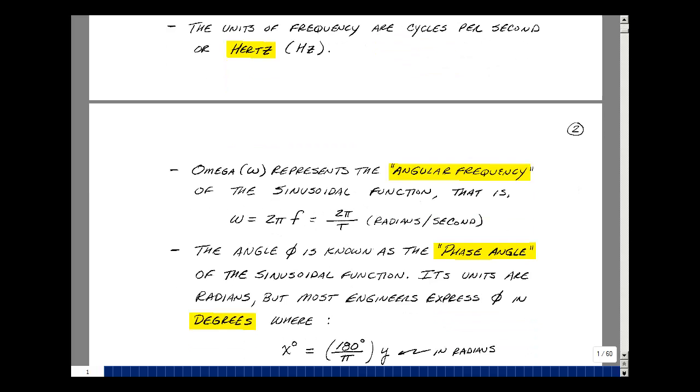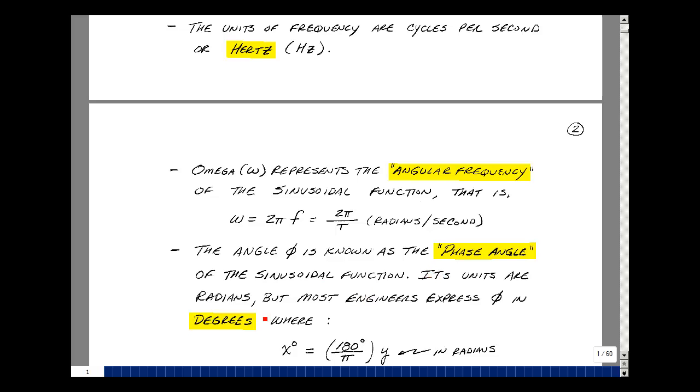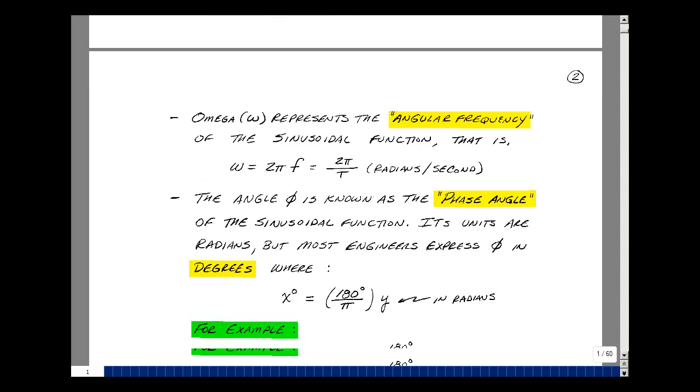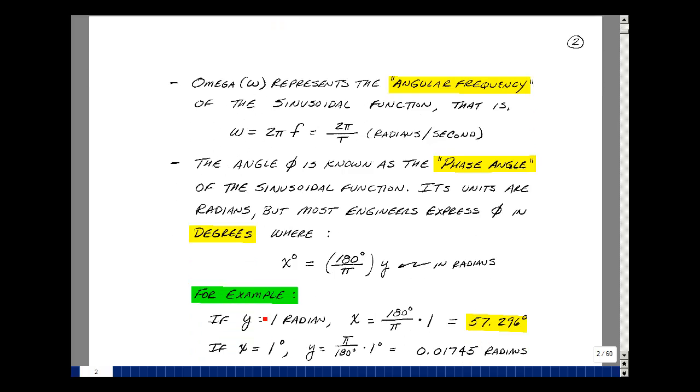Omega is called the angular frequency of the sinusoidal function, and has a formula relative to the frequency f by multiplying by 2 pi. f is 1 over the period. Units for omega are radians per second. The angle phi that was in our cosine function is called the phase angle of the sinusoidal function, and it has units of radians, but most engineers use degrees, and the conversion is to take the value in radians and multiply it by 180 degrees over pi.